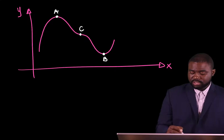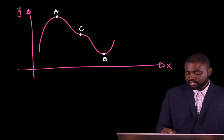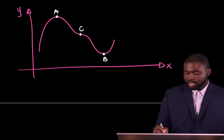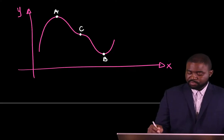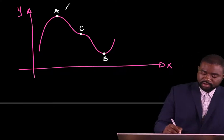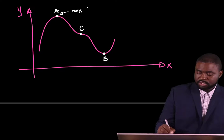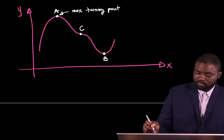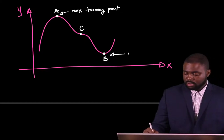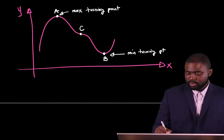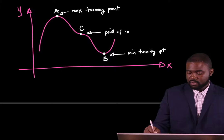At A, the slope initially is positive and it changes to become negative. At C, it changes from negative to negative. And at B, it is initially negative then it changes to positive. So A is a maximum turning point, B is a minimum turning point, and C is what we call a point of inflection.